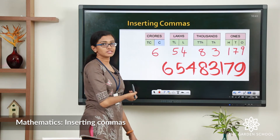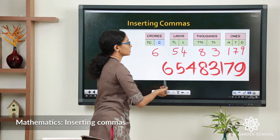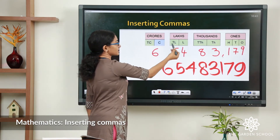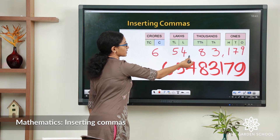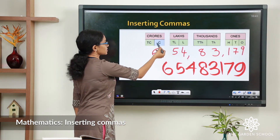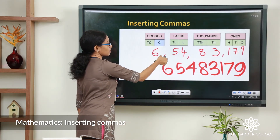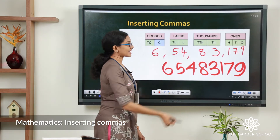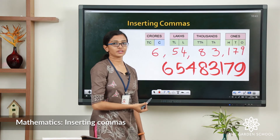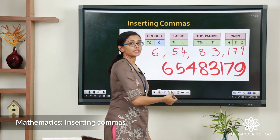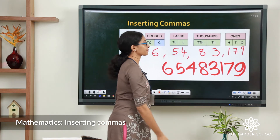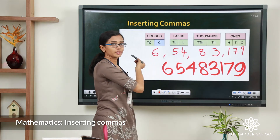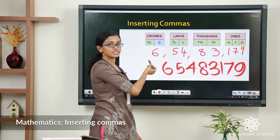Now, let us insert commas to separate the periods. To separate the 1s and 1000s, let us put a comma here. To separate the lakhs and 1000s, let us put a comma here. To separate the crores and lakhs, let us put a comma here. The digits that come under the same period are always read together and the name of the period is read alongside. Note that the 1s period has 3 places, and all the higher periods will have only 2 places each.